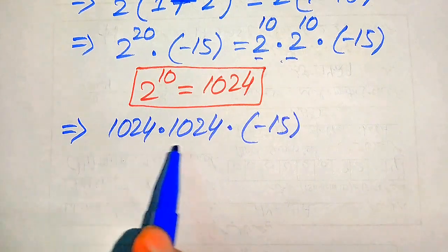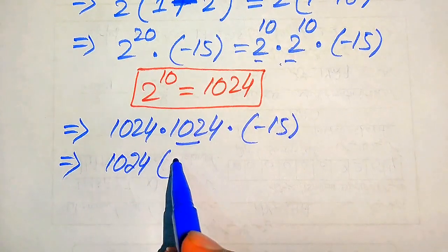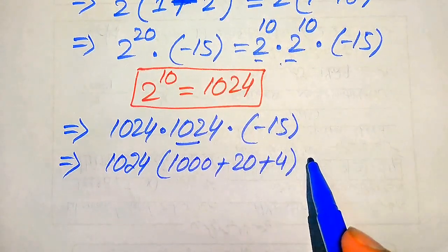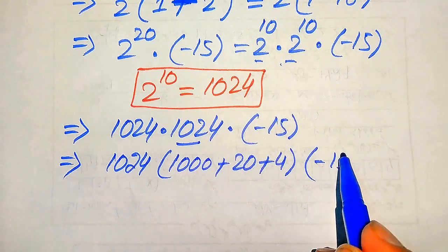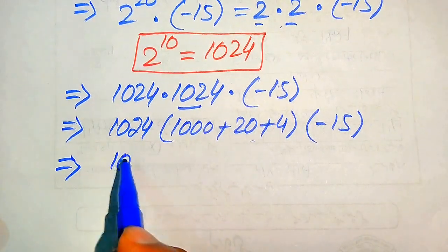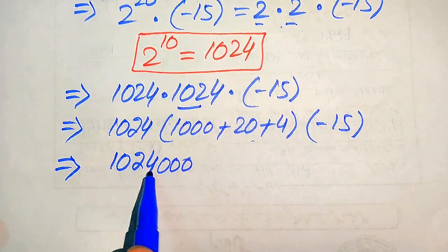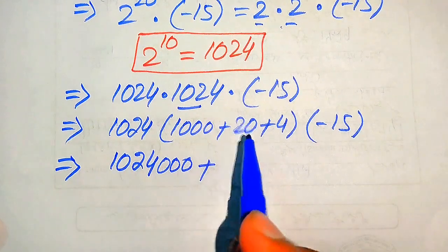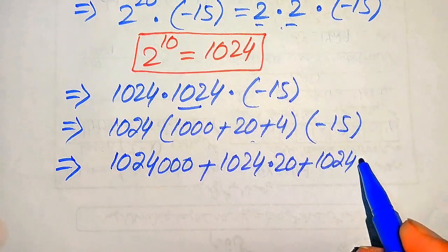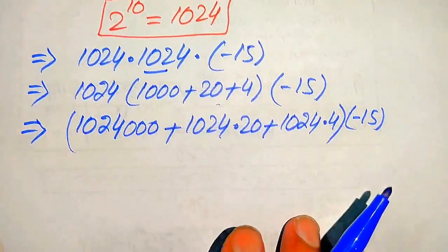We need to multiply these two larger numbers without a calculator. We rewrite 1024 as 1000 plus 20 plus 4, and multiply all of these values with 1024. It is written as 1024 times 1000, plus 1024 times 20, plus 1024 times 4, and the final answer is multiplied by minus 15.